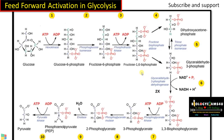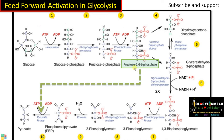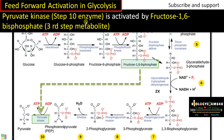Feed-forward activation in glycolysis: as you know, glycolysis is a 10-step process that occurs during cellular respiration. Here, the product in the third step — fructose-1,6-bisphosphate — activates an enzyme in the 10th step, the final step, which is pyruvate kinase. This is called feed-forward activation: a product in an early step activates an enzyme further down the pathway.